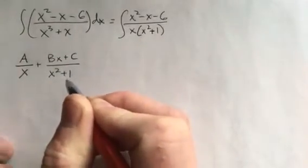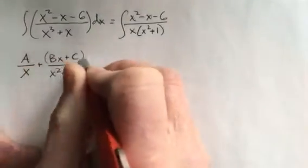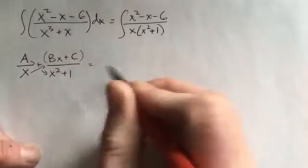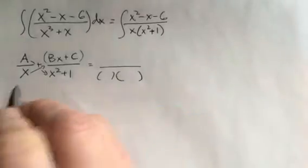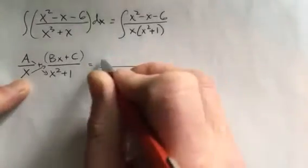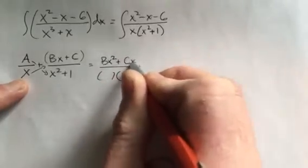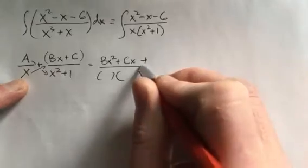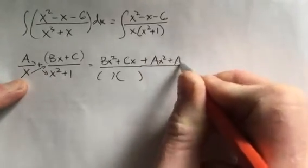plus Cx, and then plus, and then we multiply this way we would get Ax² + A. Well, we know that's going to be equal to this numerator here, and that's x² - x - 6. So if I look at just the squared terms, I know that Ax² + Bx² equals